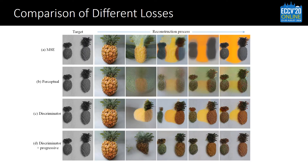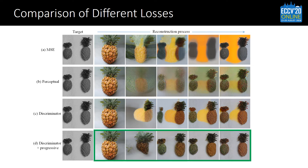Here we show another example. Our final results have a more natural reconstruction process. The original pineapple in the image moves to the right, and the left one gradually emerges. And finally, the color restored is natural without artifacts.